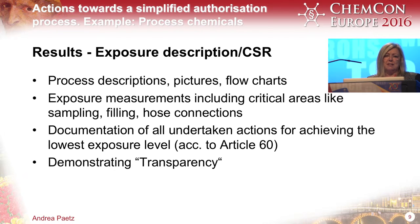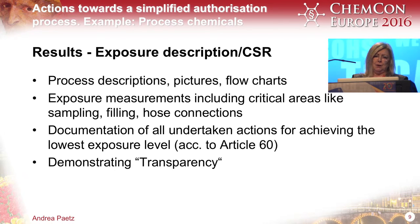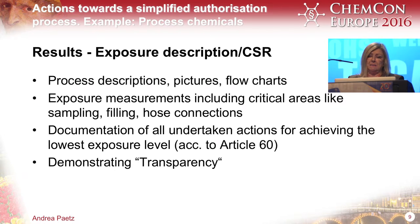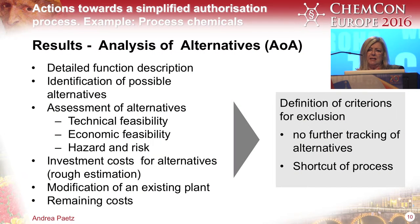A detailed function description is necessary for the analysis of alternatives — the second part of the process. You have to make a real assessment of alternatives, which means looking at technical feasibility, economic feasibility, and comparing the hazard and risk of your substance versus a possible substitute. You also have to look at investment costs for modification of existing plants. If at any one point you get a 'no,' stop there. The third point is the socioeconomic analysis.